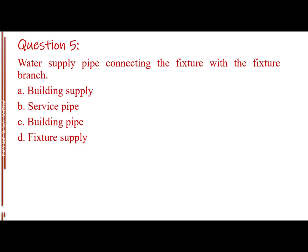Question number five. Water supply pipe connecting the fixture with the fixture branch. Letter A, Building Supply. Letter B, Service Pipe. Letter C, Building Pipe. Letter D, Fixture Supply. The answer is Letter D, Fixture Supply.